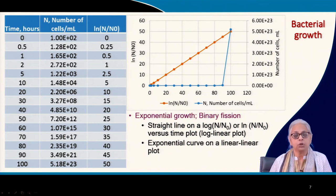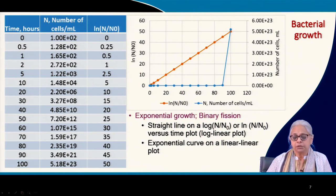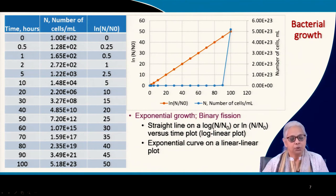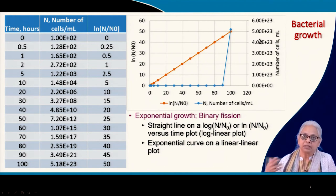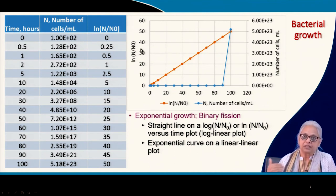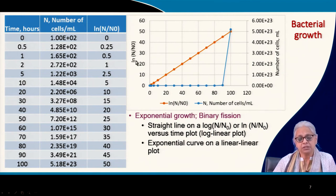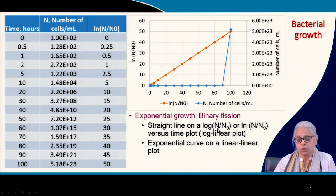You can write it as natural log or log base 10 — you know how to convert between them. On the x-axis you have time, and log(N/N0) gives a straight line. The number of cells is very difficult to show on a linear scale because they grow exponentially, so you need a log scale. This is the log-linear plot of the exponential growth phase by binary fission.